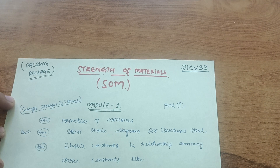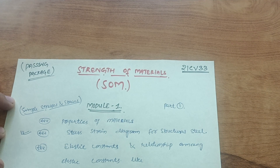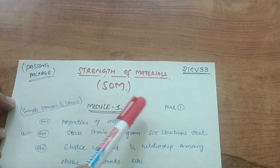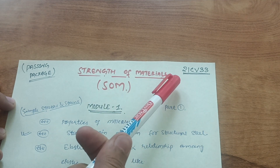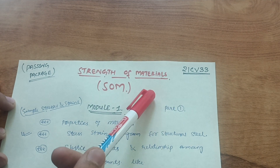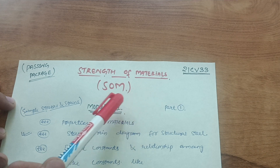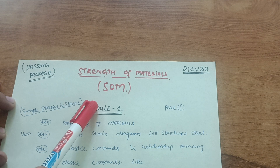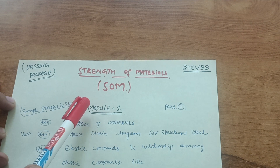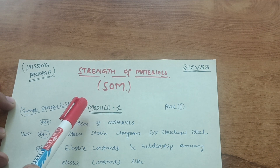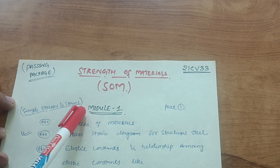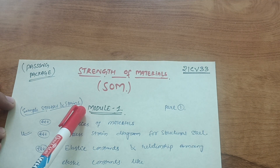Hello everyone, welcome back to my channel. Today I am with the passing strategy for Strength of Materials — a civil engineering subject with subject code 21 Civil 33. If you are a student having a backlog in this subject, today I am here with the strategy you have to follow so that you will easily pass this subject.